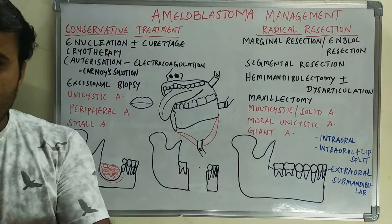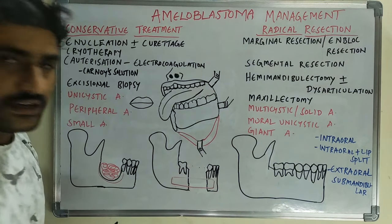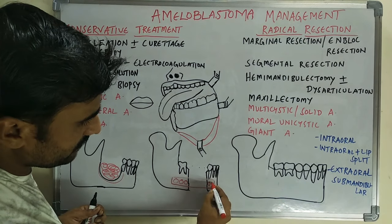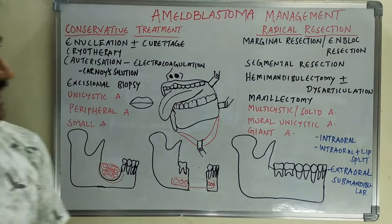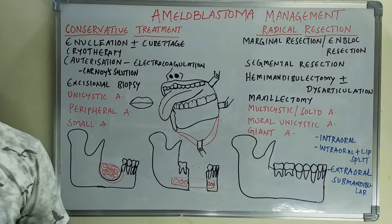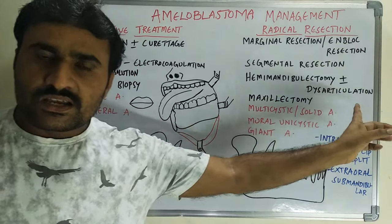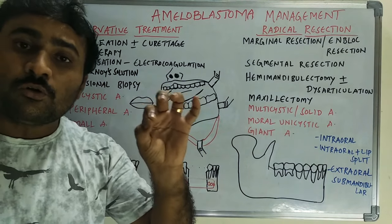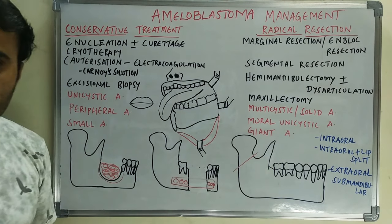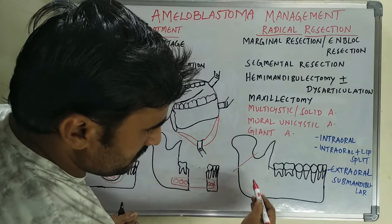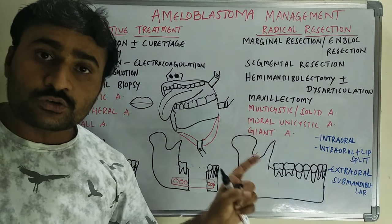After segmental resection, we fix a reconstruction plate with three screws on one side and three screws on another side. This is primary reconstruction with the reconstruction plate. Hemimandibulectomy involves the removal of the complete half side of the mandible. Without disarticulation means removing half the mandible without the condyle — removing the coronoid process along with the ramus, angle, and half side of the mandible while preserving the condyle.